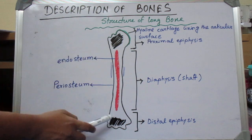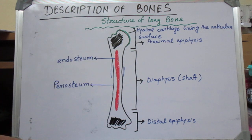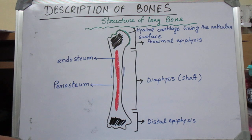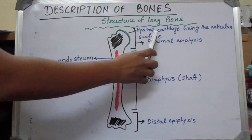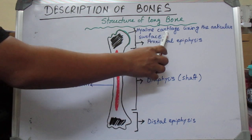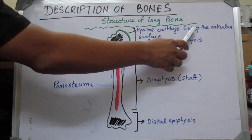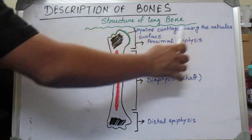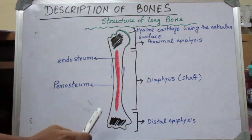Both the upper end and lower end take part in the formation of joints. There will be a thin layer of hyaline cartilage lining the articular surface in any long bone.